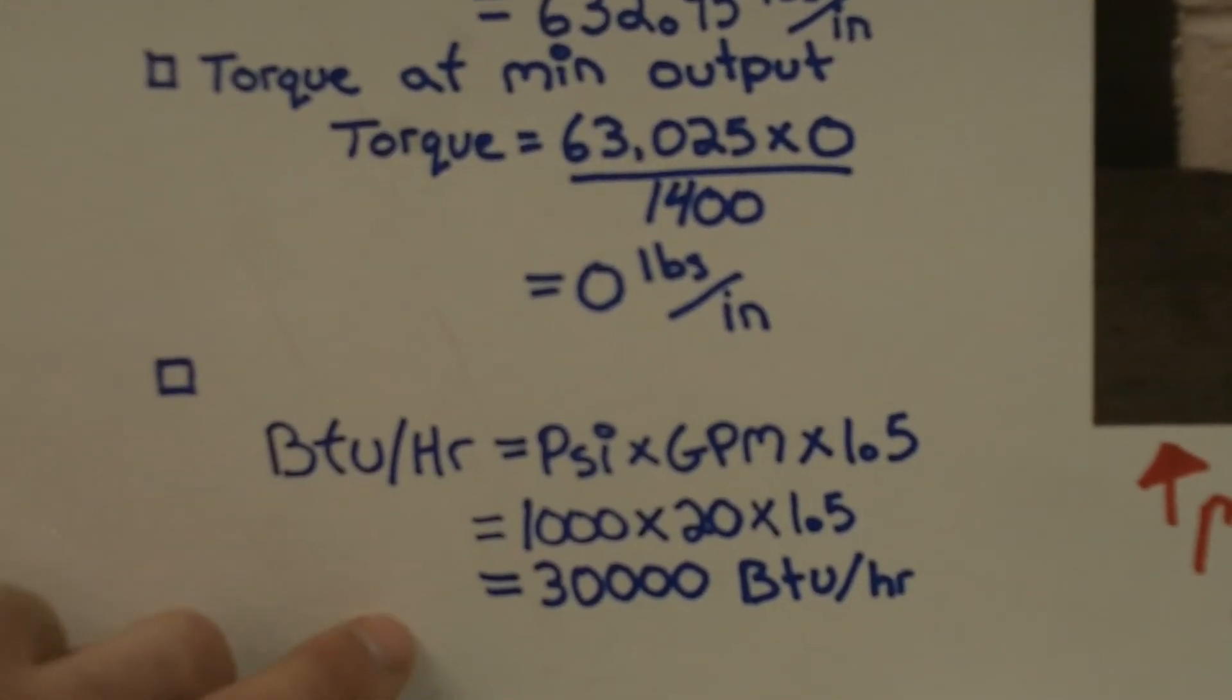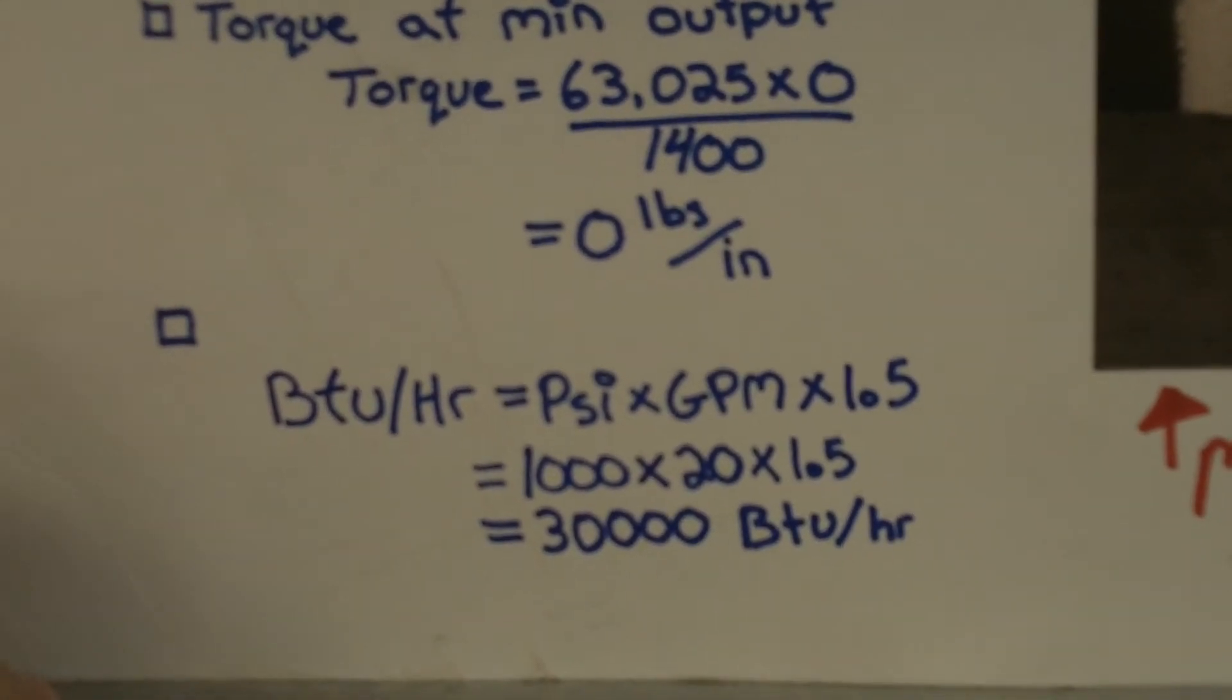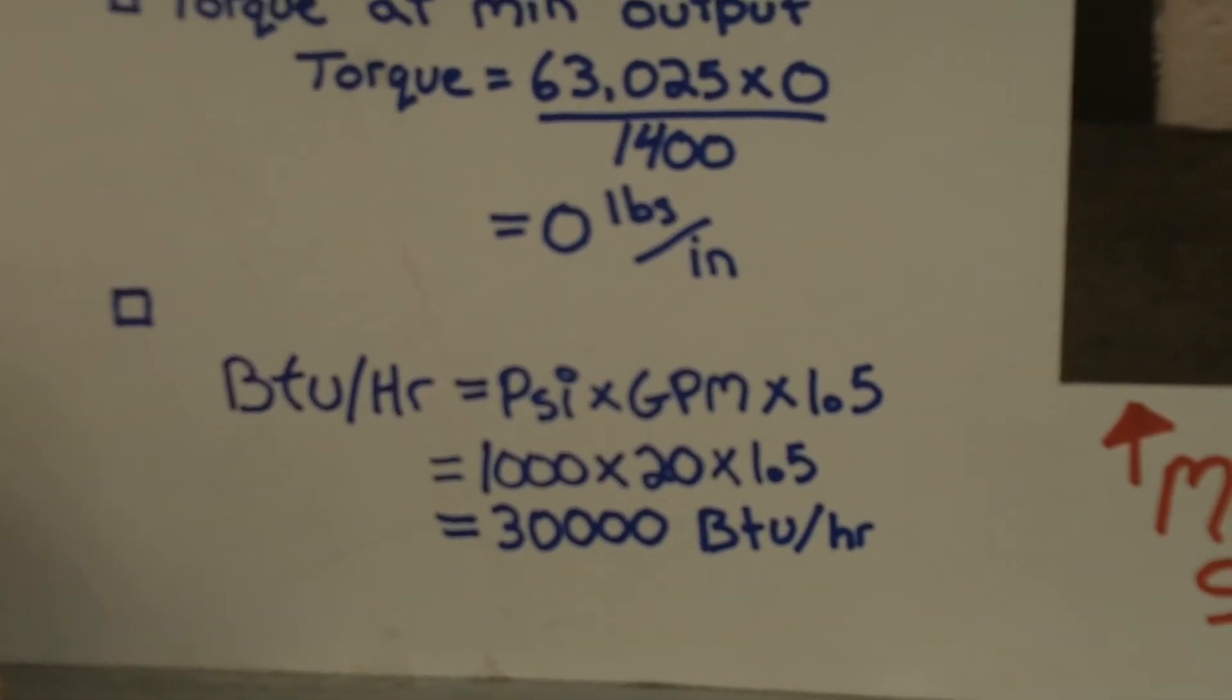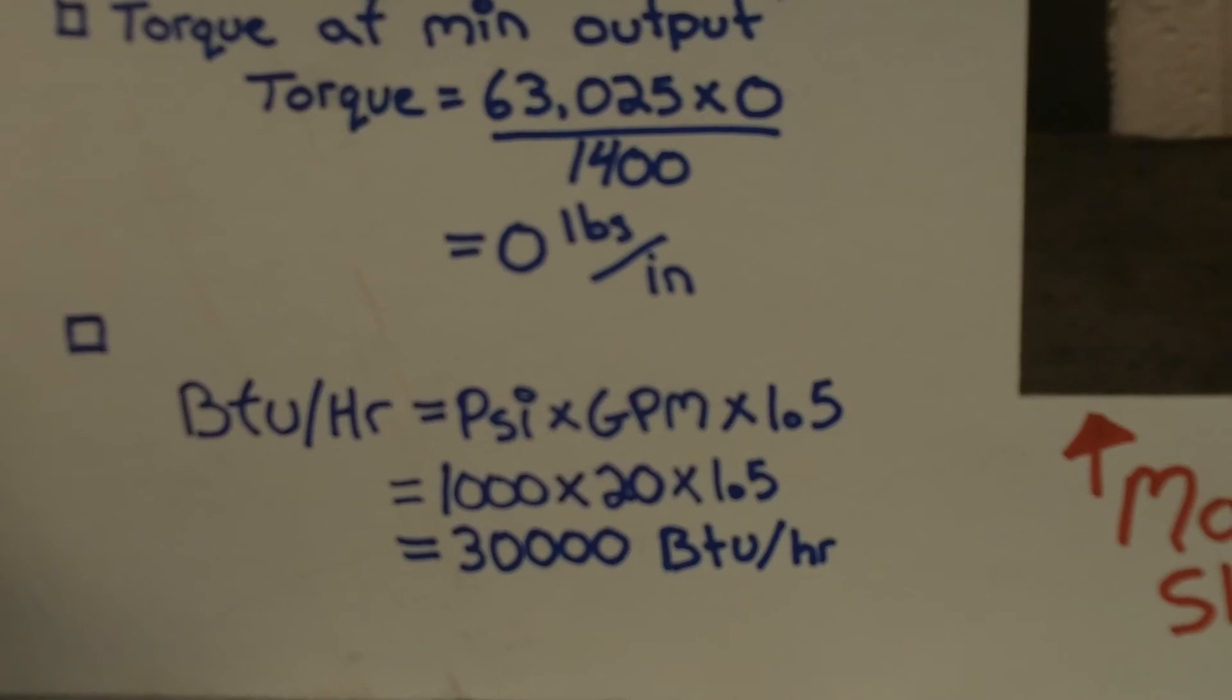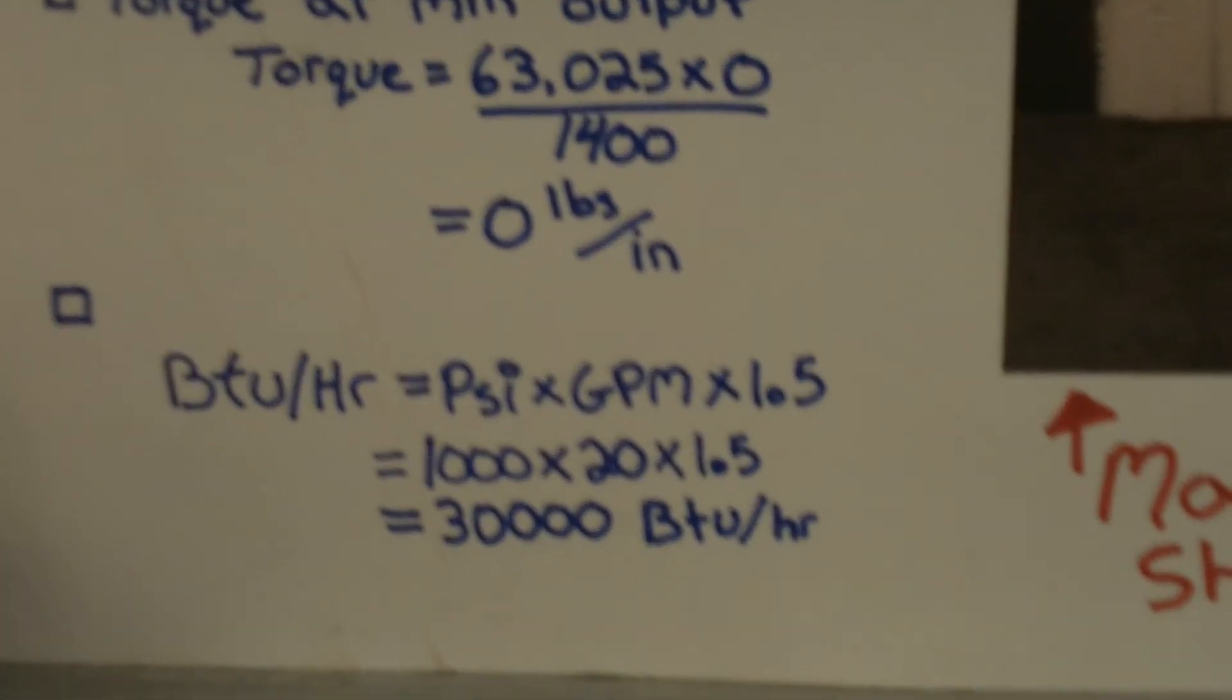Then BTU. BTU divided by hour equals PSI times GPM times 1.5. And you get, that's a big number. Namely, the less power you have to apply into it, the less heat you get out. Which means less wear on the system.